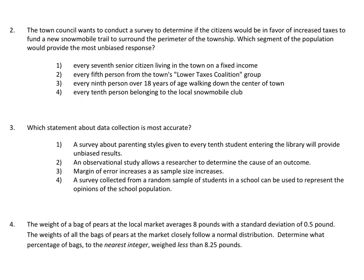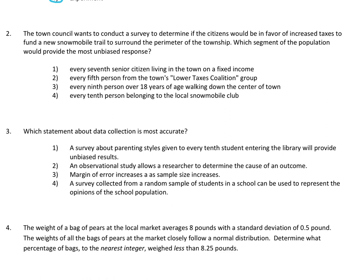Number two: the town council wants to conduct a survey to determine if citizens would be in favor of increased taxes to fund a new snowmobile trail around the perimeter of the township. Which segment of the population would provide the most unbiased response? Unbiased means fair. We want the most random selection of people possible, so we don't want to look at one specific group. Choice one — every seventh senior citizen on a fixed income — is a specific group, so that creates a biased, unfair response.